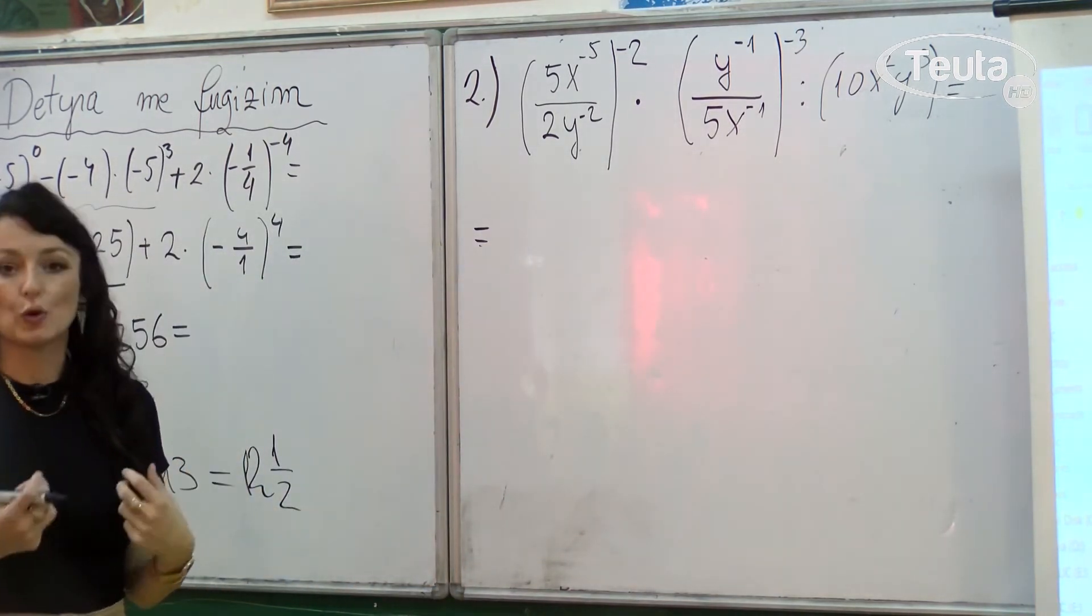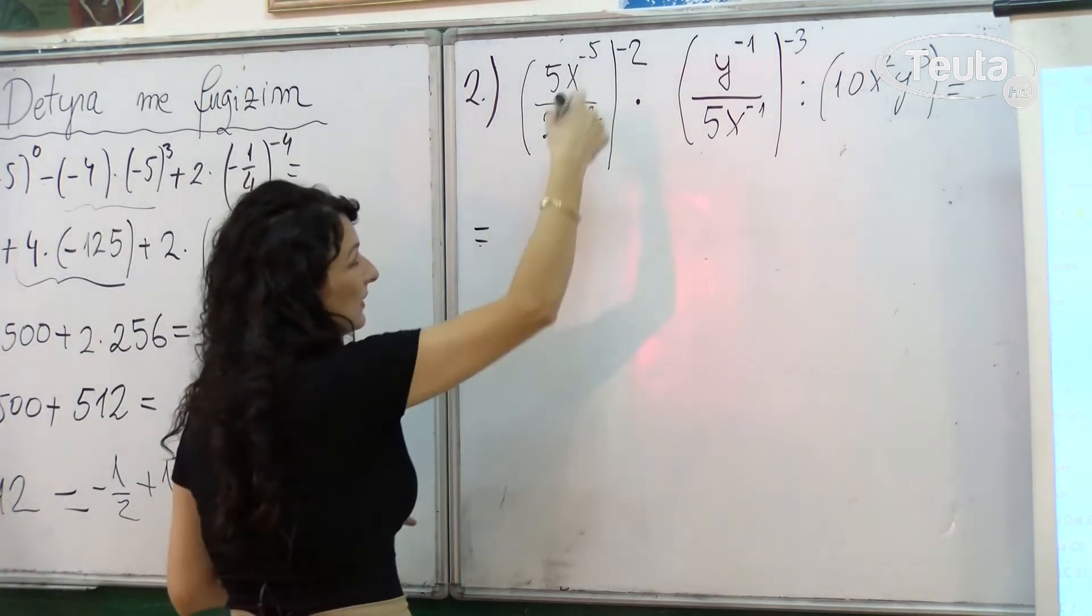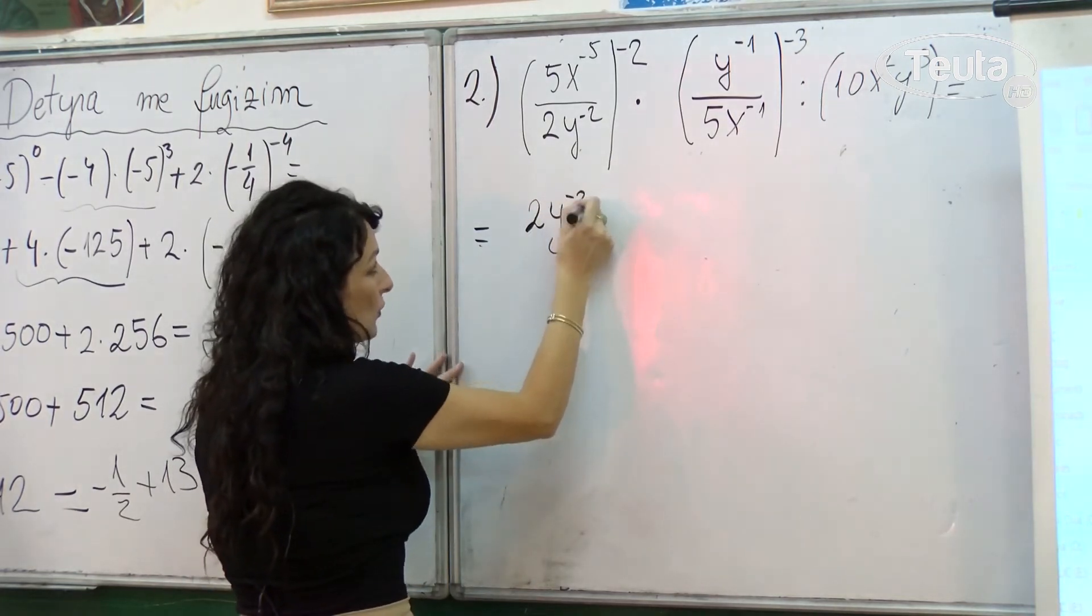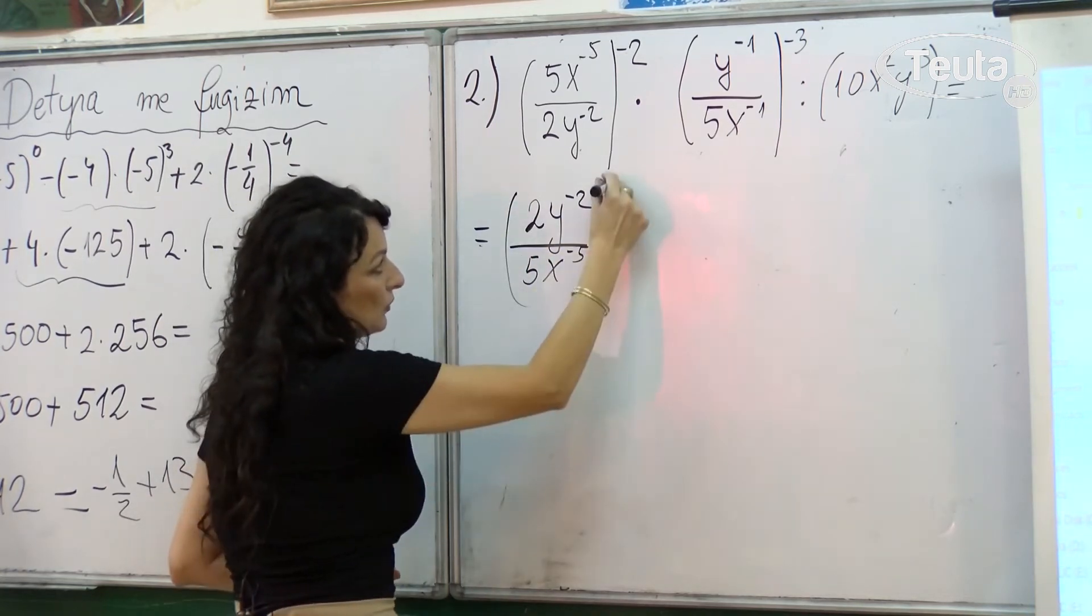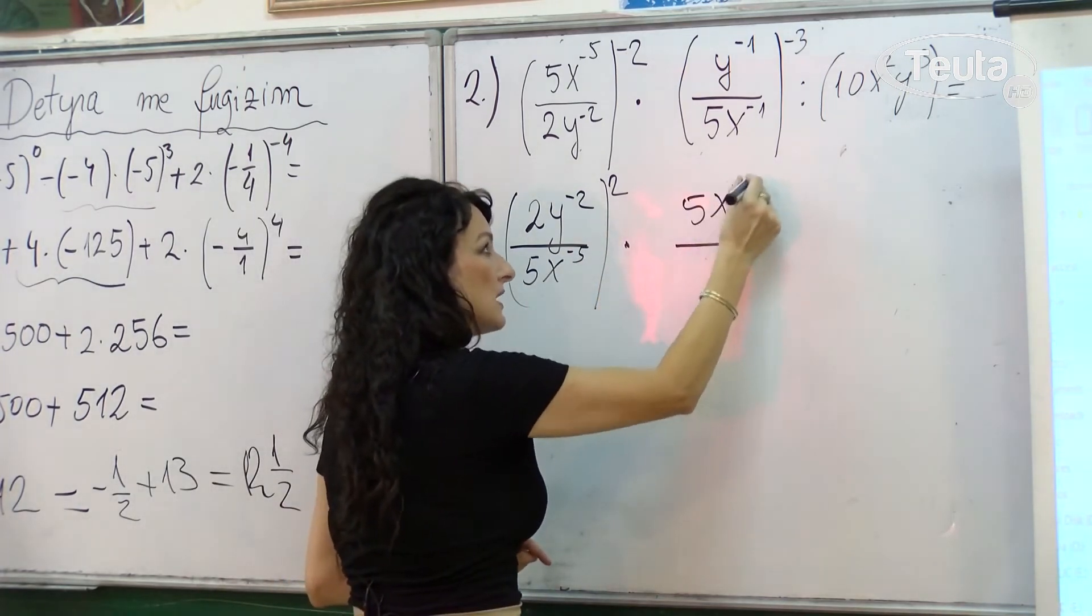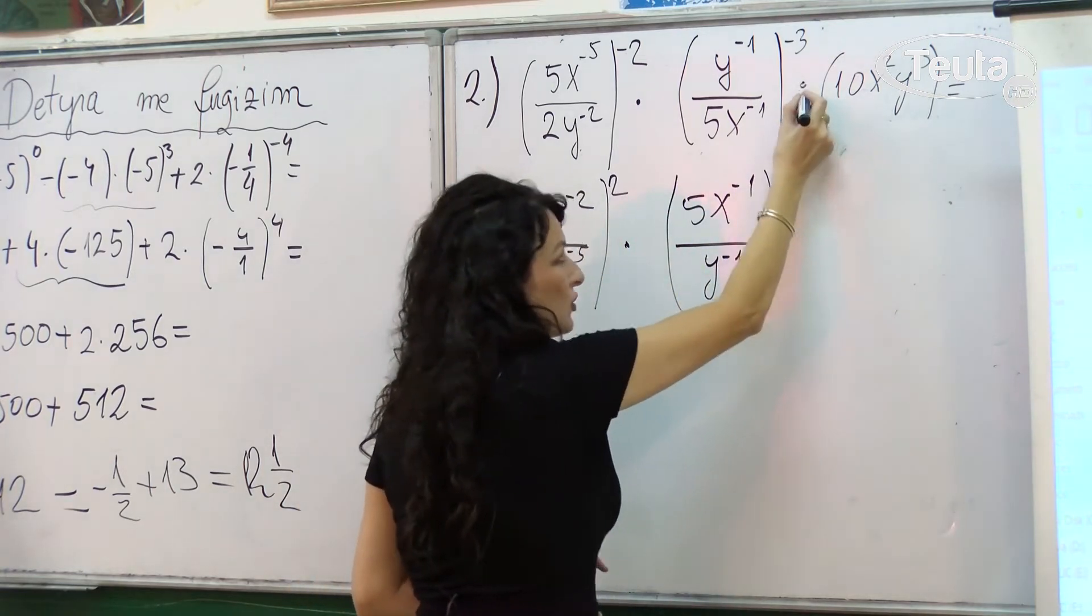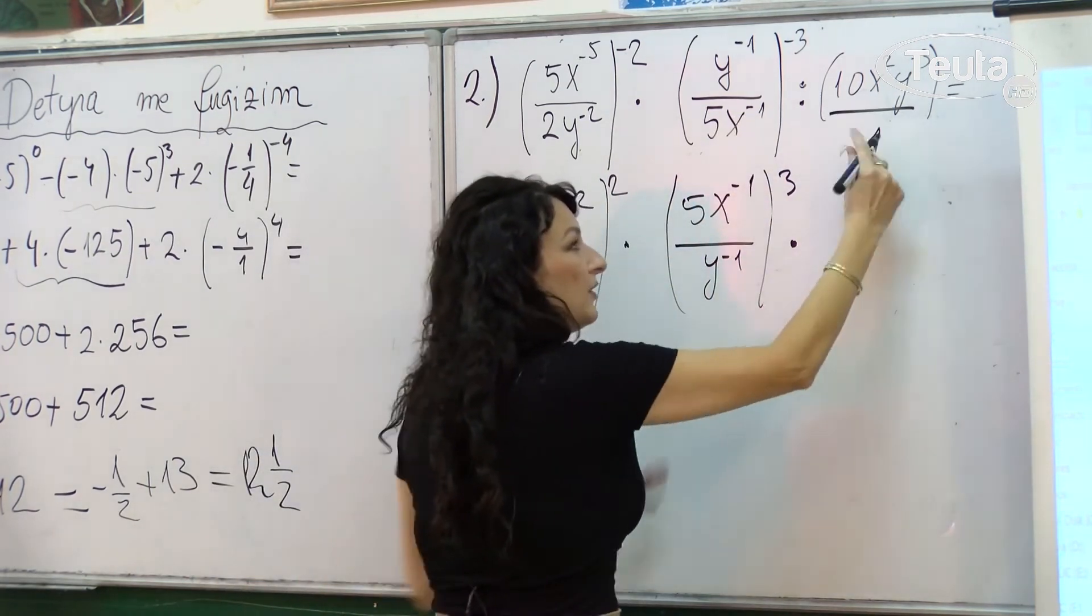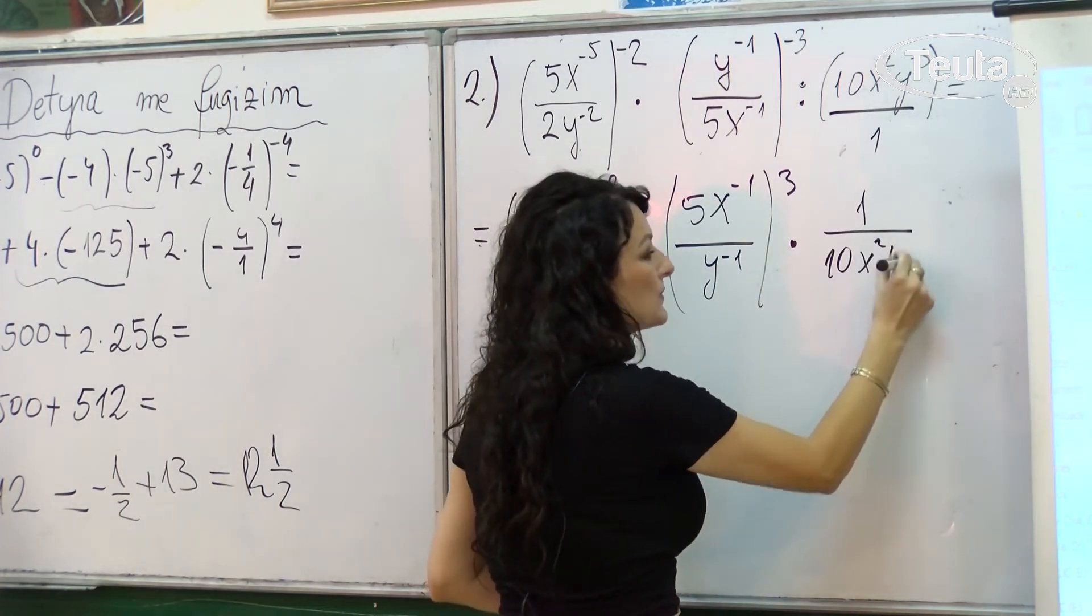Kjo do të thotë se kemi liri që ne t'i grupojmë numrat dhe ndryshoret si kemi më lehtë për ta punuar. Atëherë, së pari do të lirohemi nga eksponentët negativ dhe kryejmë vlerën reciproke. Pra 2y në minus 2 për 5x në minus 5 krejt në fuqinë e 2. Të njëjtën gjë bëjmë edhe në thyesën e 2, pra 5x në minus 1 thyesë për y në minus 1 krejt në fuqinë e 3. Këtu kemi pjesëtim. Që të mundemi të bëjmë grupimin, ju dini që pjesëtimin duhet ta shëndrojmë në shumëzim duke bërë vlerën reciproke të thyesës më djathtë. Pra kemi 1 thyesë për x në 4 y minus 3.